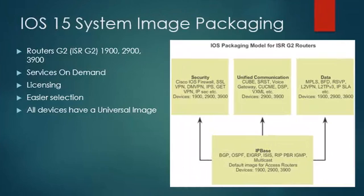IOS 15 System Image Packaging: Cisco Integrated Services Router Generation 2 — the 1900, 2900, and 3900 series — supports services on demand through the use of software licensing. This enables customers to realize operational savings through software ordering and management. When a new ISR G2 platform is ordered, the router ships with a single universal Cisco IOS software image, and a license is used to enable specific feature packages. IOS image selection is easier because all features are included within the universal image and activated through licensing.